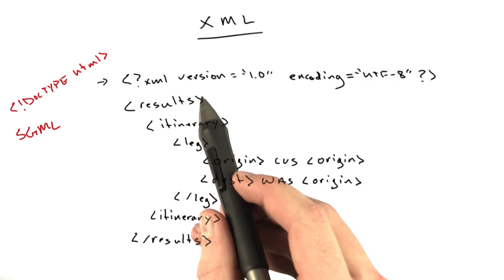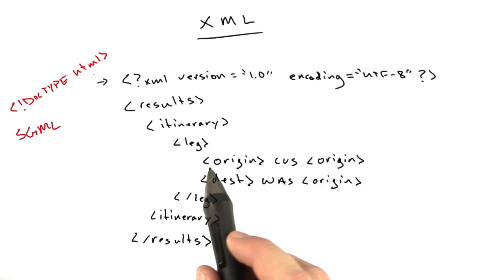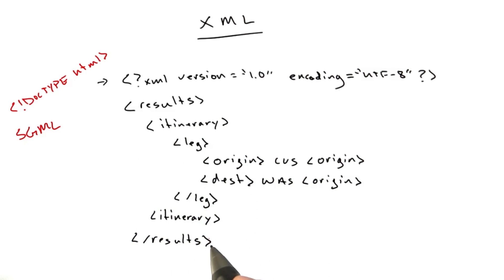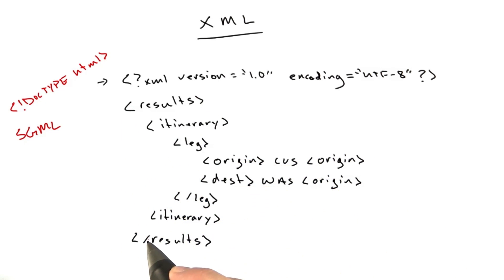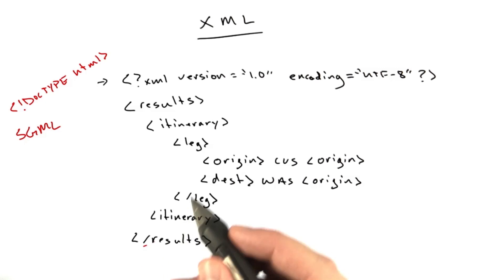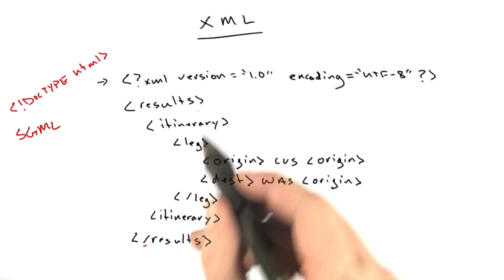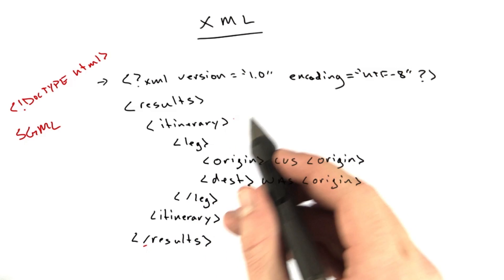Now, the main difference between XML and HTML is in XML, every tag has to have a closing tag. So, we've got opening results, closing results. The tag format's the same. We've still got our less thans and our greater thans, and our slashes to indicate a closing tag. But we have no void tags in XML.